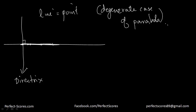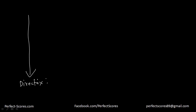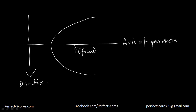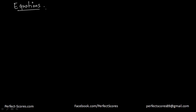So let's understand the various components of a parabola. This line over here is known as the directrix. Then you have the line on which your point F is located, which is known as the focus, and this line is known as the axis of the parabola. And the intersection of the axis and the parabola is known as the vertex of the parabola. So you have the vertex, the focus, the axis, and the directrix — these four things make up the components of a parabola.